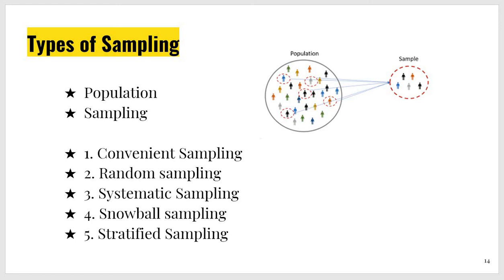Sampling and population — you must understand the difference between them. Population is all population; suppose I want to conduct a study on teachers who teach MA English — in Pakistan, thousands of teachers teach MA English, so that is the total population. Sample means I will take two or five teachers from each province — that would be my sample. There are different types of sampling techniques. Convenient sampling is that sample which you can collect easily, for example from your neighborhood or your own college. Random sampling means there is no particular rule — you select your sample randomly. Systematic sampling means you collect your sample in a systematic manner, like selecting even-numbered or odd-numbered students.